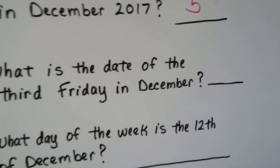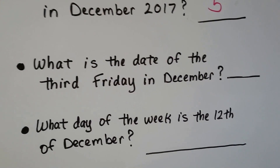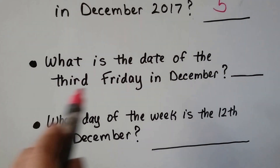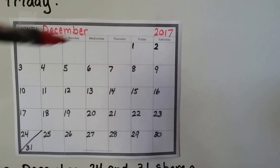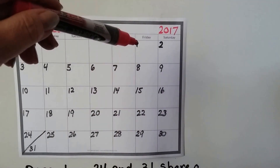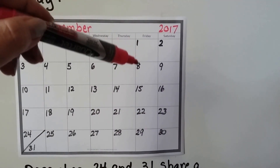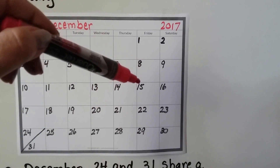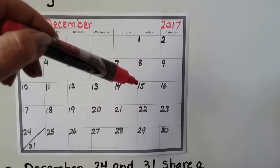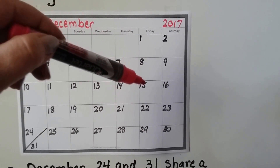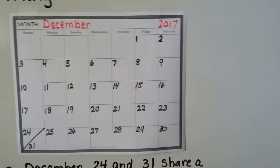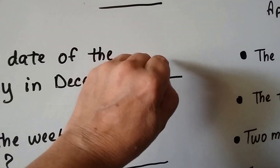What is the date of the third Friday in September? This is the first Friday, that's the second Friday, so that must be the third Friday. It's the 15th.